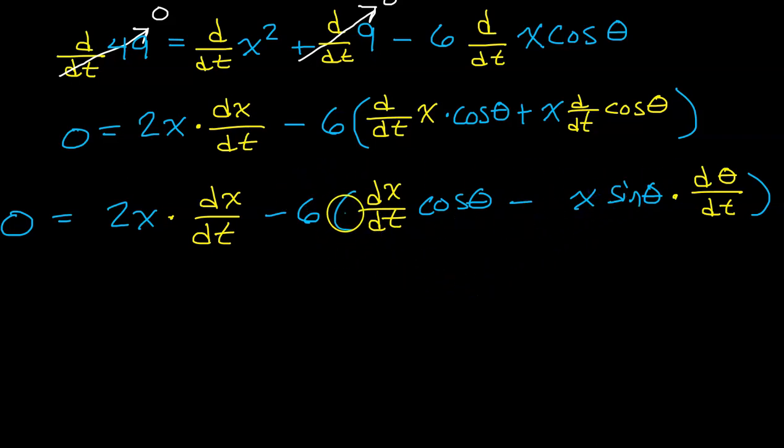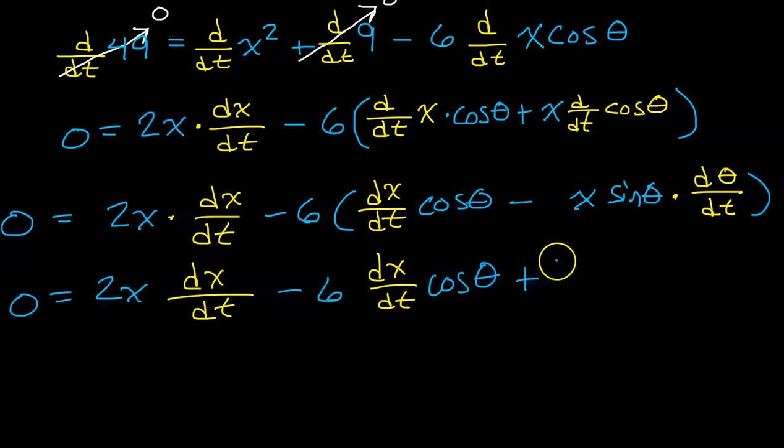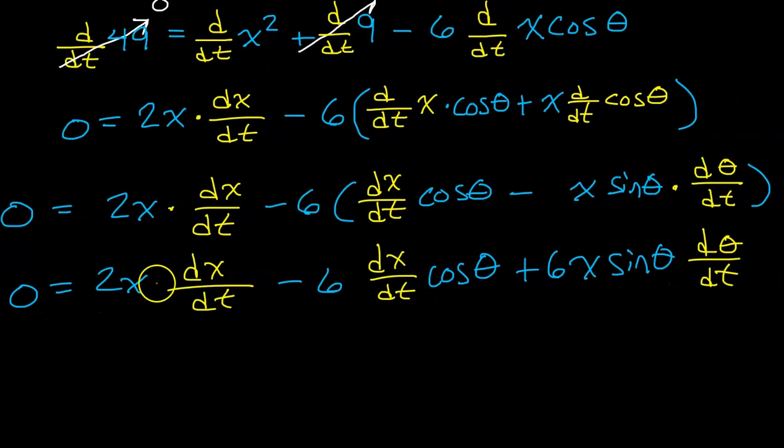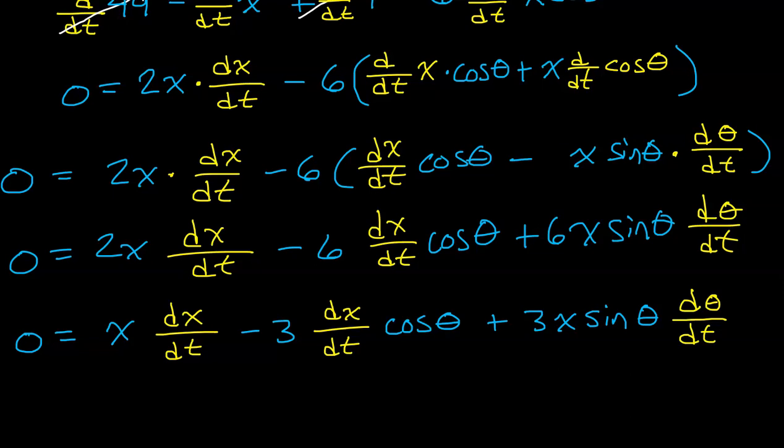Time to distribute this negative 6. So, I'm going to have 0 equals 2x dx dt minus 6 dx dt cosine theta. Now, I'm going to have plus 6x sine theta, because a negative times a negative is a positive. And don't forget your d theta dt. Notice that all of these terms are divisible by 2. So, I'm just going to do that real quick.